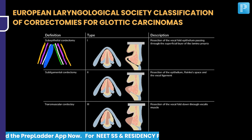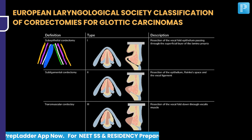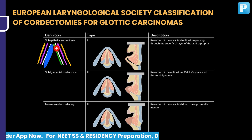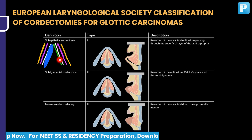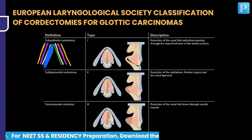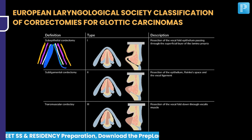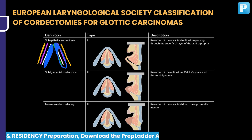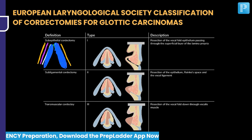If I go up to the ligament, I resect the Reinke's space. What is Reinke's space? Between the epithelium and the superficial lamina propria, we call it Reinke's space. If I go through this space and down to the ligament, I resect the epithelium, the superficial lamina propria, Reinke's space, and the vocal ligament. This is called sub-ligamental chordectomy.